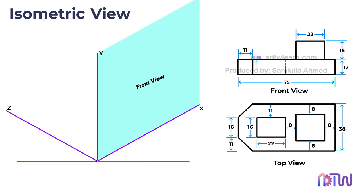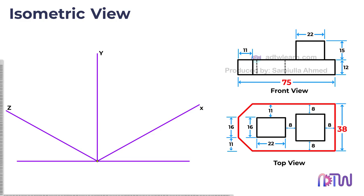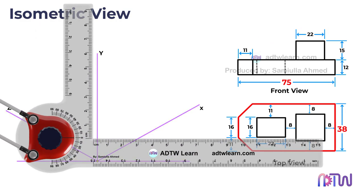We will draw the front view of the object in the XY plane as this will make more edges visible. Let's start by creating the top view of the object, which is always placed on the XZ plane. Based on the given orthographic projections, the object's total length is 75 millimeters and its width is 38 millimeters. Use a drafter to construct a rectangle with dimensions of 75 millimeters by 38 millimeters.